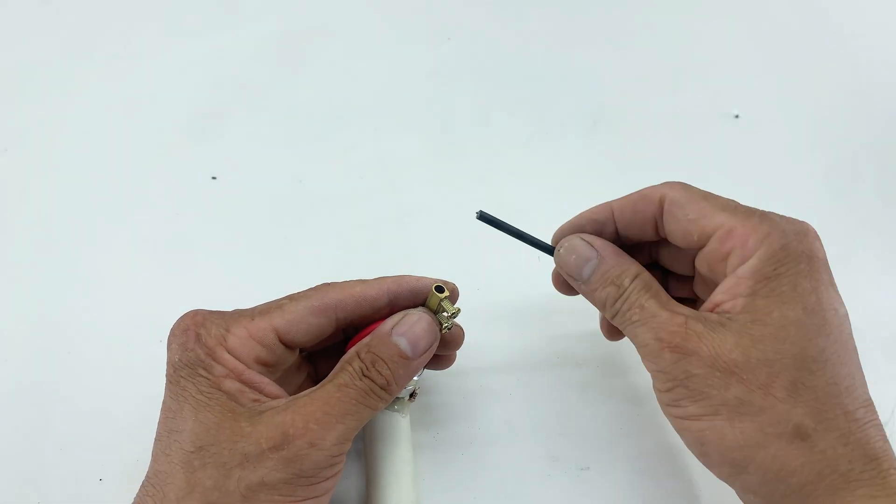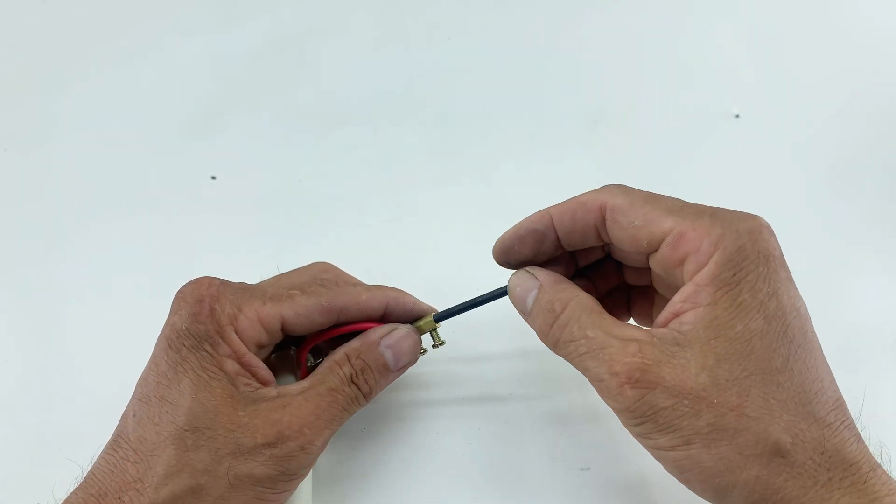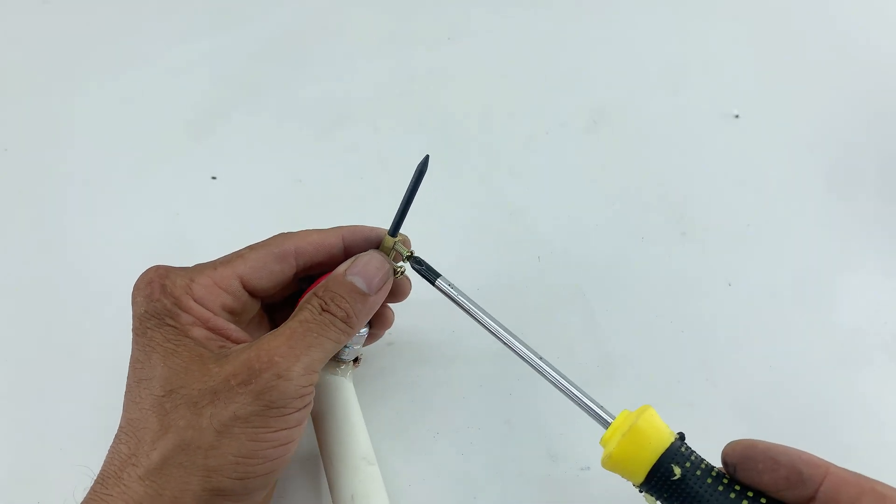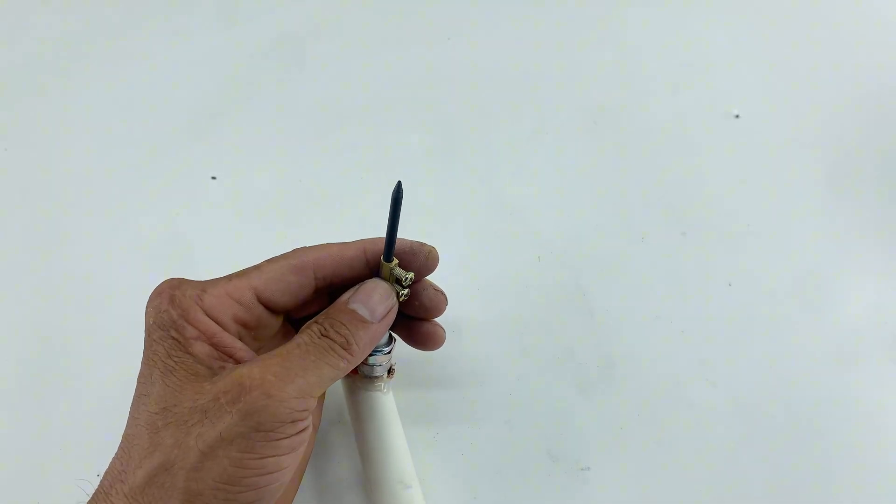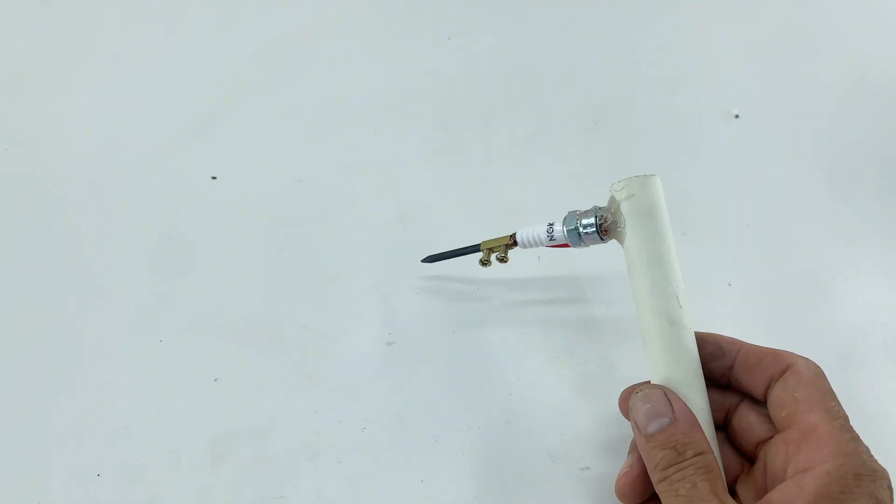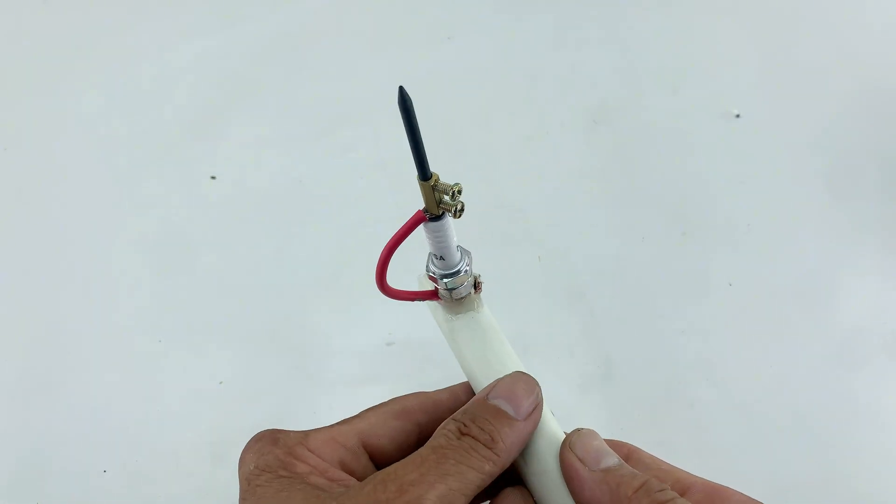Now, I insert the sharpened carbon rod into the brass connector on our spark plug tool. I use a screwdriver to tighten the connector, ensuring the carbon rod is held firmly in place and makes good electrical contact. And just like that, our soldering iron tool is ready.